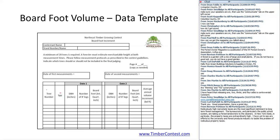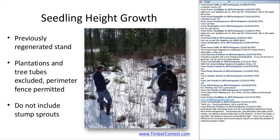The seedling height growth measurements are taken in areas where you have previously regenerated the stand — some kind of canopy disturbance or removal. The more sunlight you have, the faster those trees will grow. We will exclude plantations. If you've planted the seedlings or used tree tubes, those are excluded. It is possible to put up a perimeter fence to exclude deer. You should not include stump sprouts that directly come up. Some species will root sucker — we may have judges subset that category, for example with black locust compared to other hardwood species.